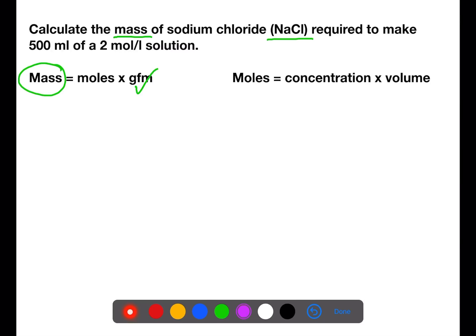We have a volume of 500 millilitres given in the question and a concentration of 2 moles per litre. This means that we would be able to calculate the moles using these bits of information and transfer them over to the other equation to calculate the mass.